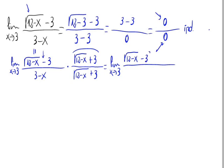So that is the same as writing the first term squared minus the second term squared. And let's write the denominator down here, that is 3 minus x times the square root of 12 minus x plus 3.